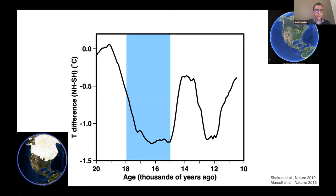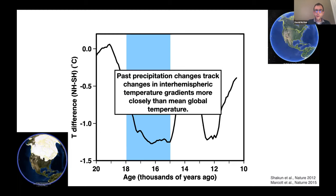Why did these lakes appear not during peak temperature difference but at the beginning of global warming? The key is not mean global temperature but changes in temperature gradients. Looking at the temperature difference between the northern and southern hemispheres, we see an extended period of relative cooling of the northern hemisphere as global warming began, due to disruptions of ocean circulation that reduced heat transport across the equator. This pattern is reproduced globally — in the Asian monsoon region, northern Africa, South Africa, and the central Andes.